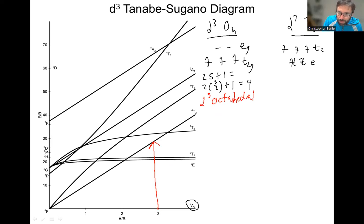So just to write all this stuff out, this is for octahedral D3, right? Our ground state is quartet A2G. For D7 tetrahedral, our ground state is quartet A2. We don't put the G there. And so our first spin-allowed state, our excited state, is quartet T2G when talking about octahedral. So we're going from quartet A2G to quartet T2G. And for D7, the tetrahedral case, we'll just drop the Gs. It's going to be the same symmetries there.